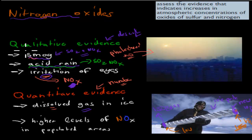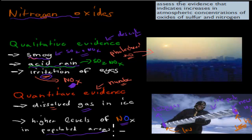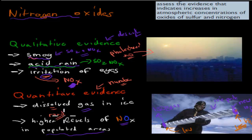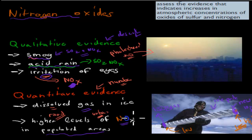We also find generally higher levels of nitrogen monoxide in populated areas. We can test this using probes that measure the concentrations of nitrogen monoxide. Rural areas — farmland — have lower levels compared to urban areas that have lots of cars, because cars are the main source of nitrogen oxides. So the more cars, the more NOₓ — oxides of nitrogen — in the atmosphere.